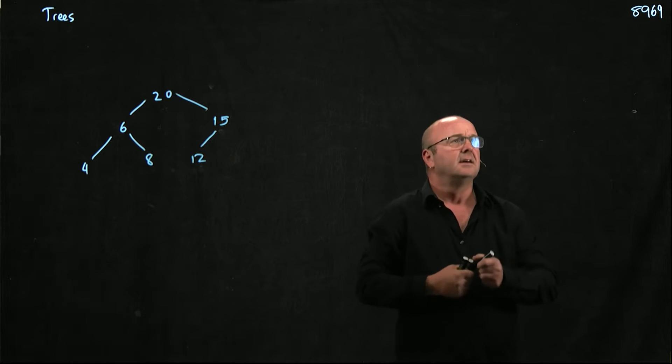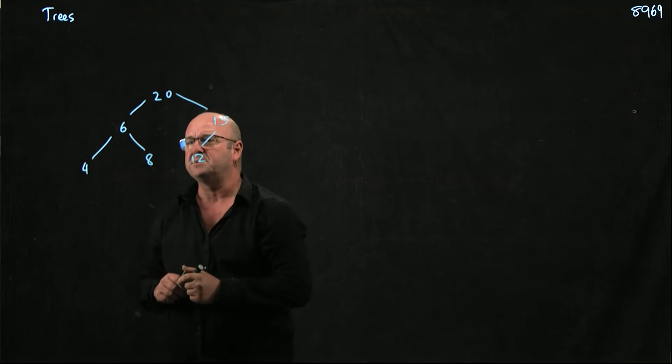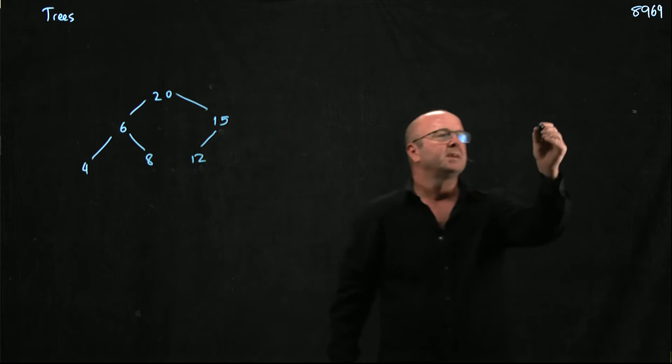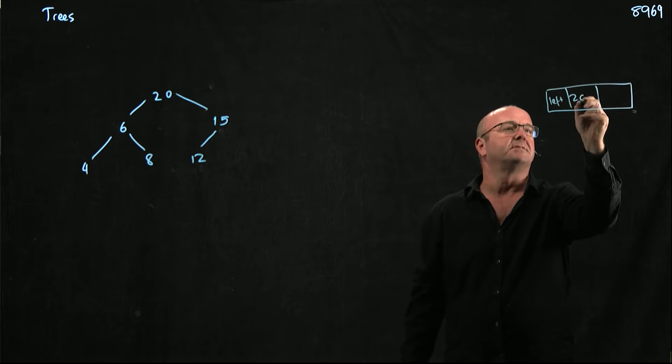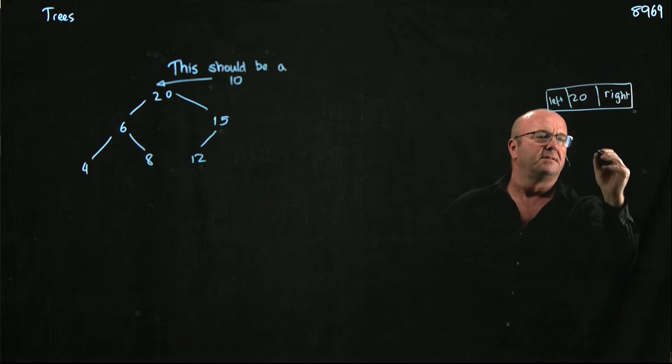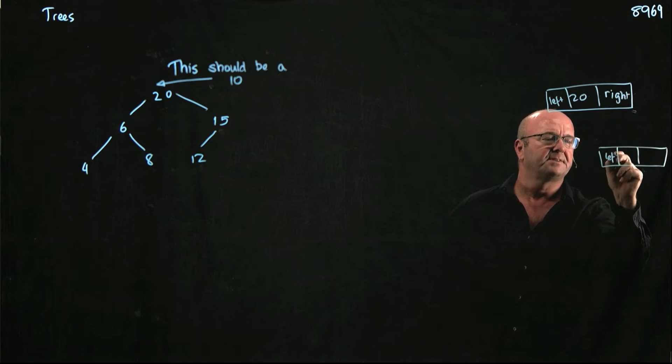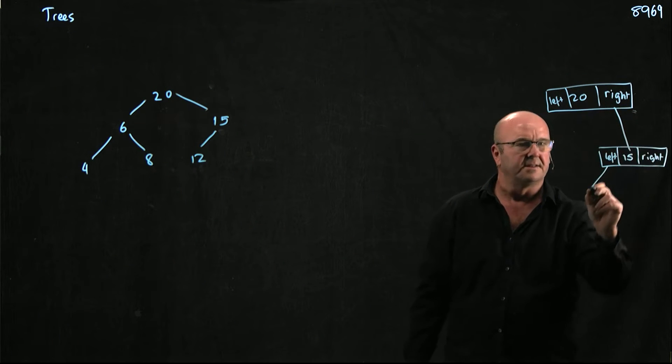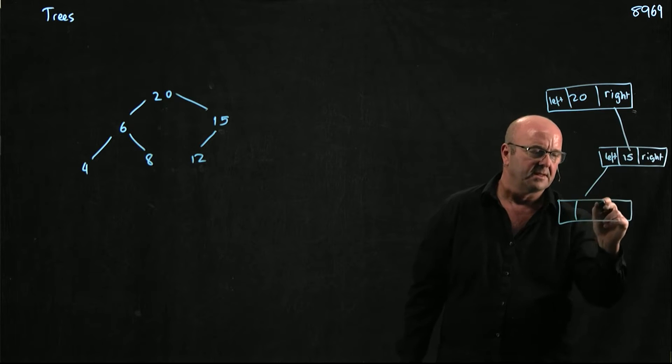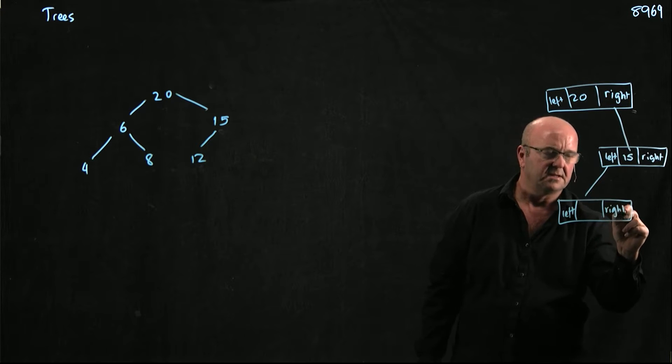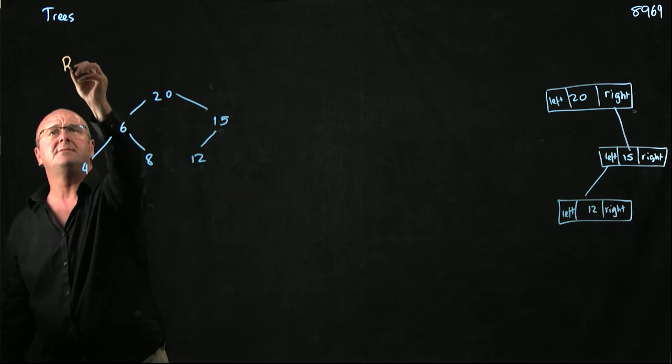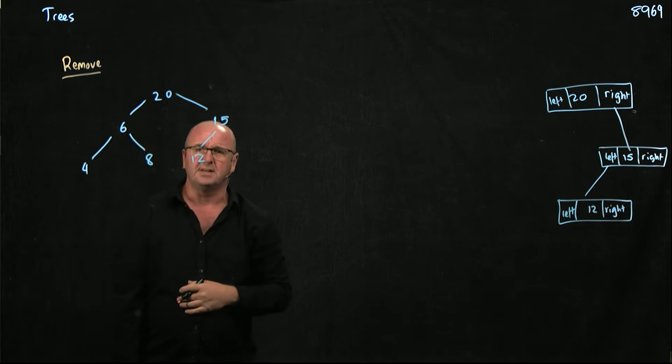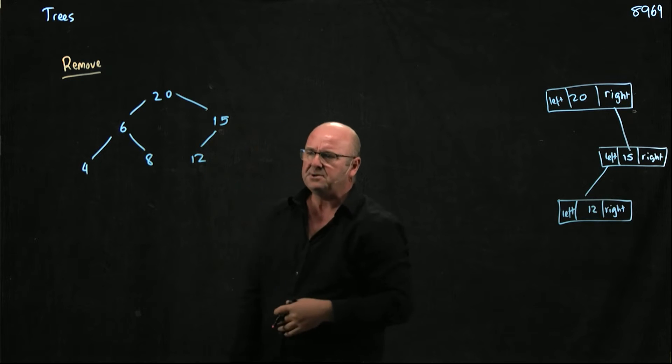And so remember that we have pointers for our objects. So if we consider for example the 15, then we have left. Let's start actually with the 20 and right. The right node has left and right and points to the 15. And the left node has left, right and points to the 12. So if we want to remove something from the tree, let's say we want to remove the 12. How do we remove the 12?